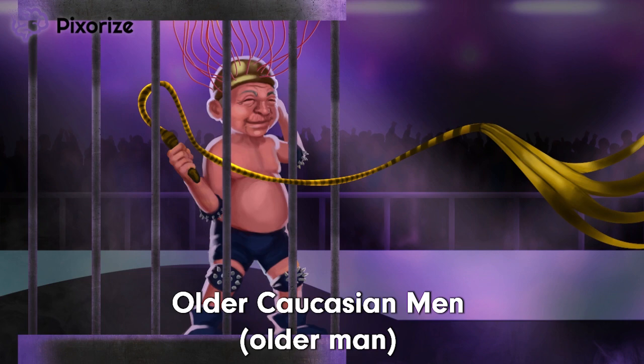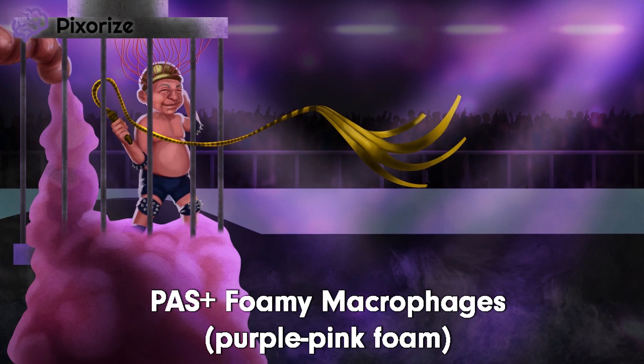Now take a look at all that foam in the dancer's cage — because who doesn't love a foam party? The foam is kind of purplish-pink, which reminds me of PAS staining, or periodic acid-Schiff staining, the purplish-pink stain used to visualize sugars. The cage here represents a macrophage, aka a macro-cage. Whipple's disease is usually diagnosed by biopsy of the small intestines, which reveals PAS-positive foamy macrophages.